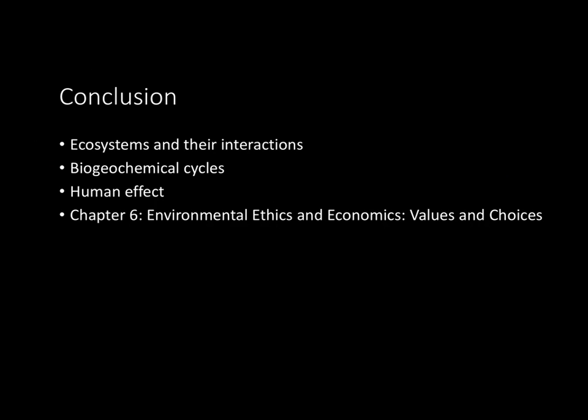So basically, let's conclude with the idea that ecosystems are very complex and there are interactions within ecosystems, which is a pretty recurring trend in environmental science. Biogeochemical cycles are always going to be important to remember because they keep coming up — the carbon cycle, for instance, is directly related to global warming and climate change, which we'll get much farther into deeper in the book. And of course, we're always going to need to keep the human effect in the back of our heads, especially when related to the biogeochemical cycles. Next chapter, Chapter 6, we're going to get into environmental ethics and economics, values and choices.